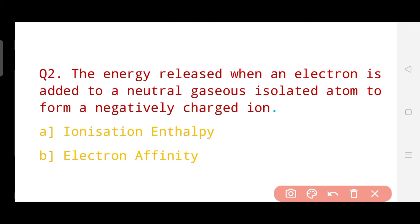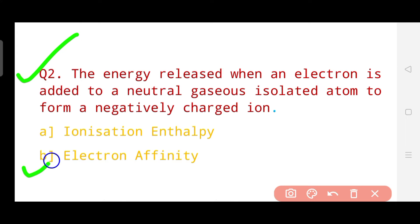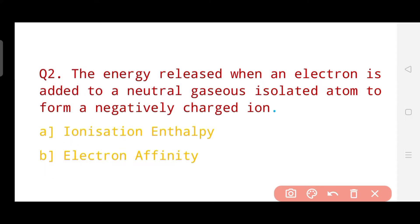Question number two says: the energy released when an electron is added to a neutral gaseous isolated atom to form a negatively charged ion — what is that called? Your options are: option a, ionization enthalpy; option b, electron affinity. I hope you have done this question. The correct answer is option b, which is electron affinity. These are basically definitions which you must have learned by heart. Now let's go to question number three.